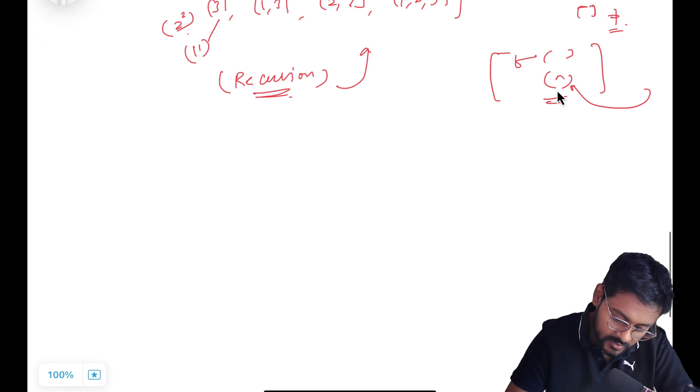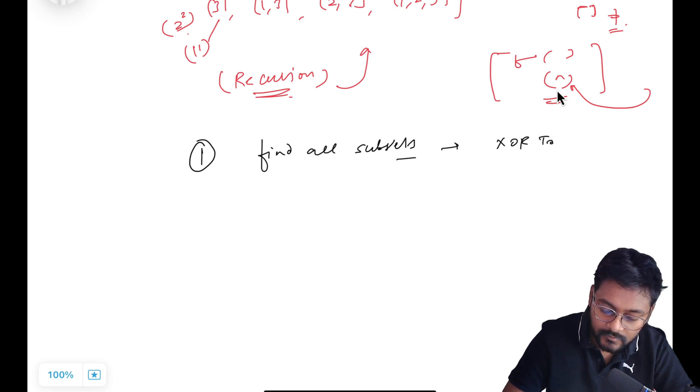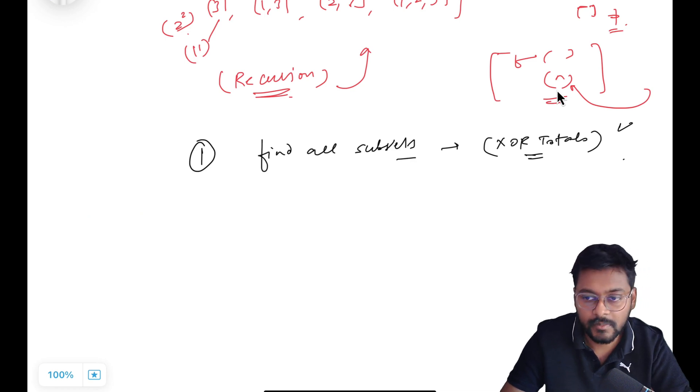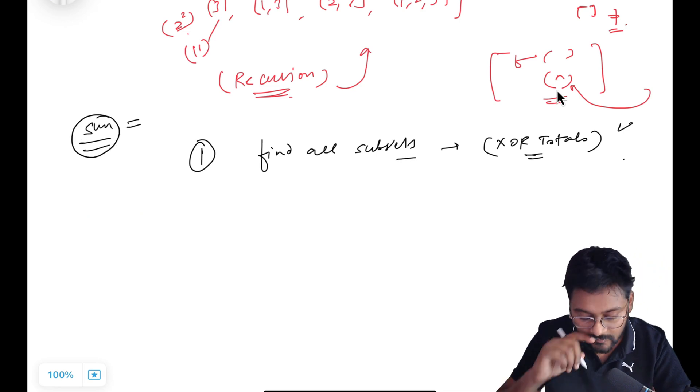So my problem is reduced to: now you are given nums, first of all you have to find all the subsets. Finding all the subsets means finding all the XOR totals. And whenever you are getting a XOR total, it means in the terminating case, edge case, then add that in some global variable sum.